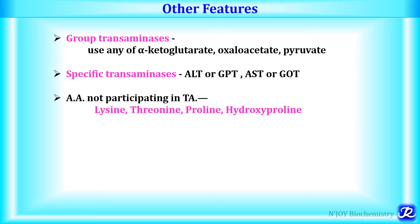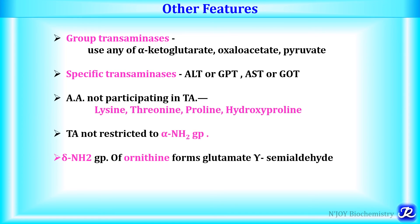The amino acids which do not participate in transamination are lysine, threonine, proline and hydroxyproline. Additionally, transamination is not restricted to the alpha amino group — for example, the delta amino group of ornithine forms glutamate gamma-semi-aldehyde.